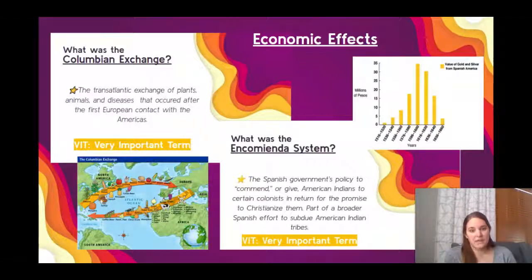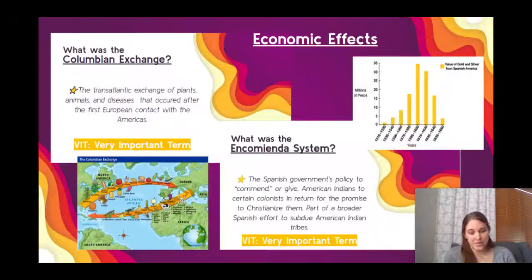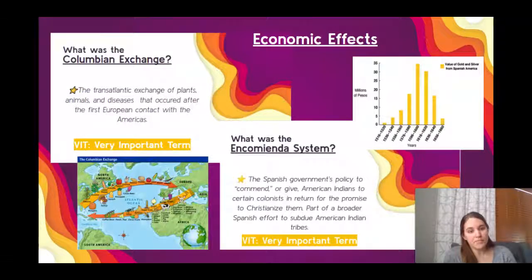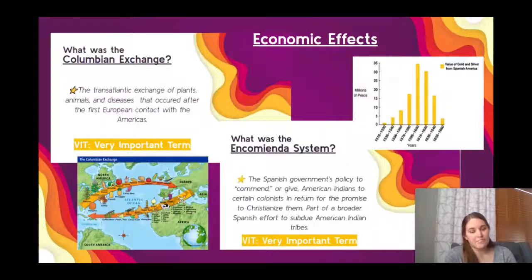That eventually led to the Encomienda system, where the Spanish, through their colonization, took areas of land and promised to protect the American Indians in exchange for labor. As you can see in the graph, the amount of gold and silver extracted from the New World caused Spain to become an incredibly wealthy empire during this time.